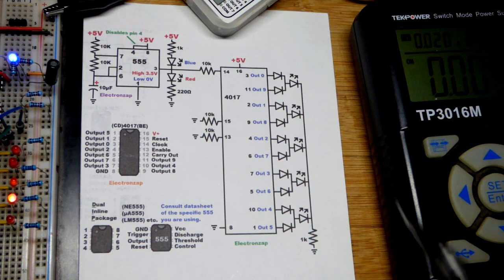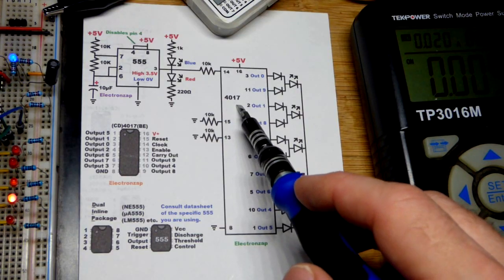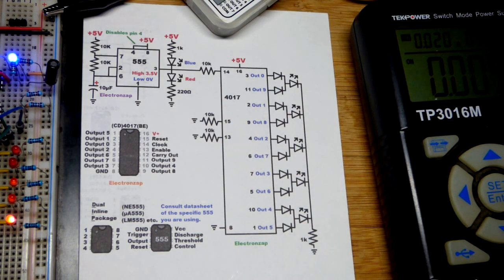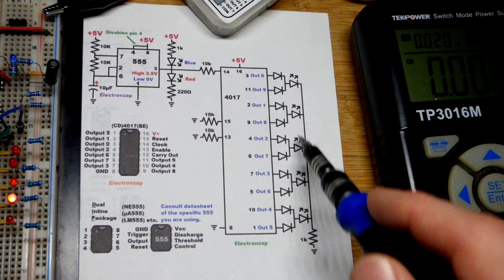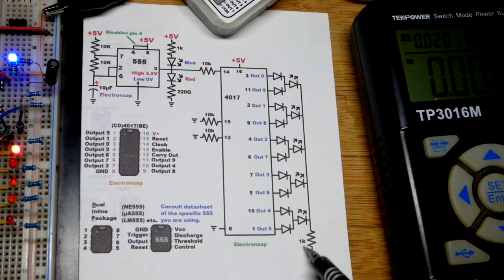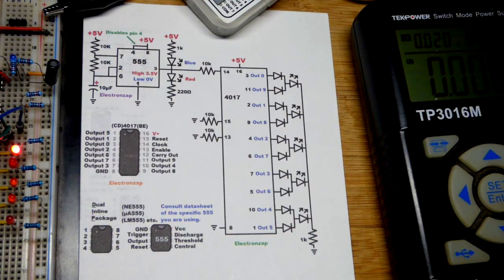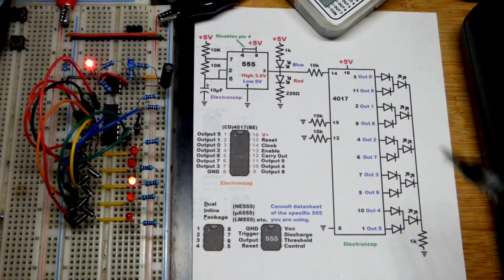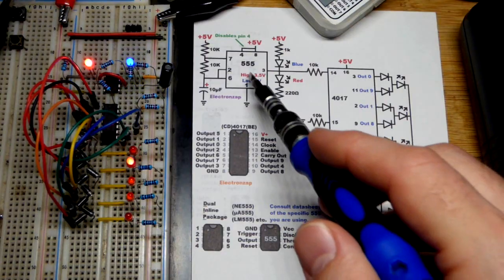And now we're going to take a short look at the schematic for the 4017. It's a decade counter wired to light five red LEDs like the Knight Rider effect, and they could all share the same resistor, even though in the physical circuit I gave each one its own current limiting resistor.